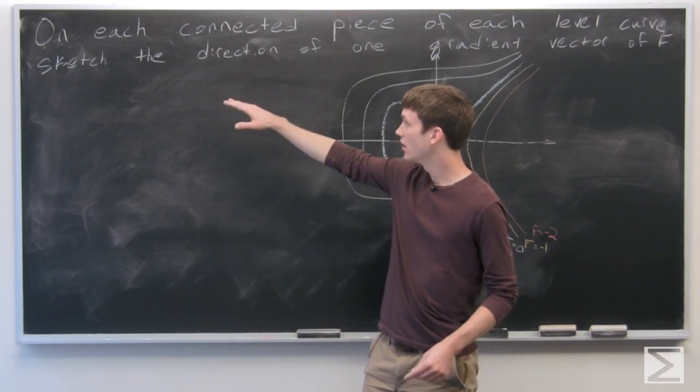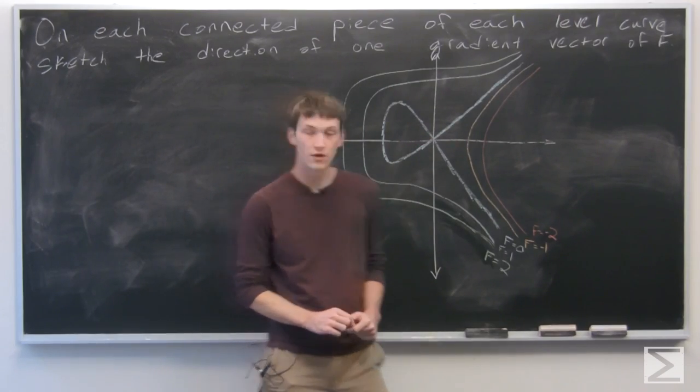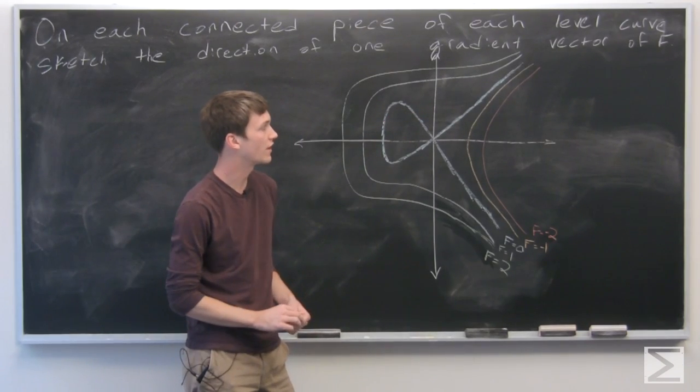In this problem we're asked to, on each connected piece of each level curve, sketch the direction of one gradient vector of f.